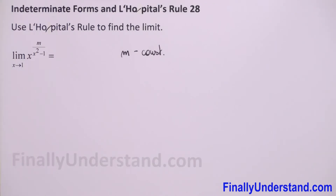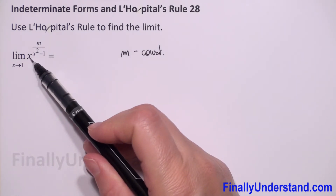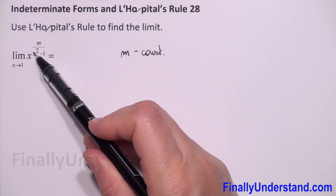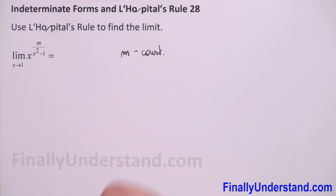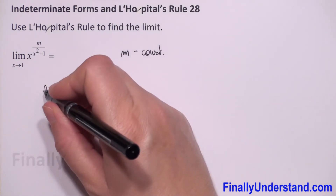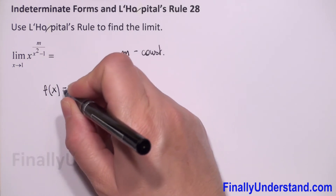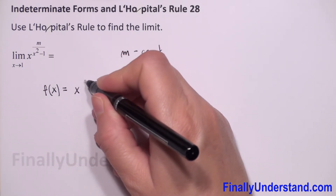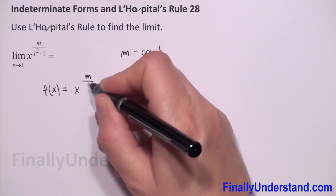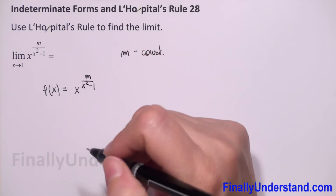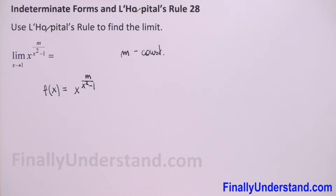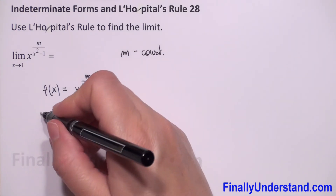To use L'Hôpital's rule we need indeterminate forms 0 over 0 or infinity over infinity. Because we have x in the base and x in the power, first let me put f of x equals x to the power m over x squared minus 1.